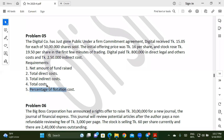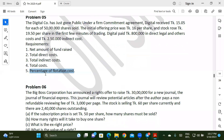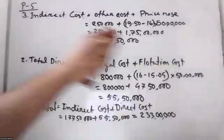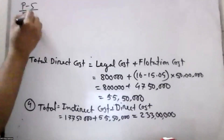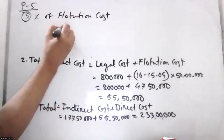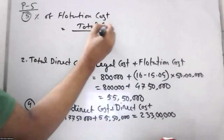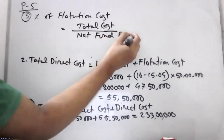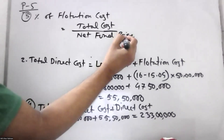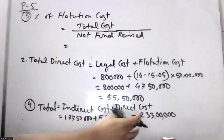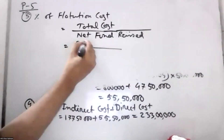3 questions. The percentage of the flotation cost — flotation cost is what? The total is calculated. The percentage of flotation equals total cost divided by net proceeds.